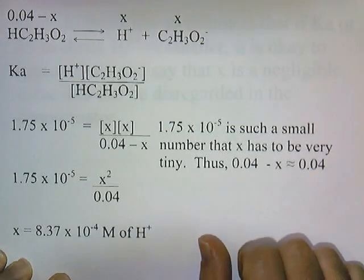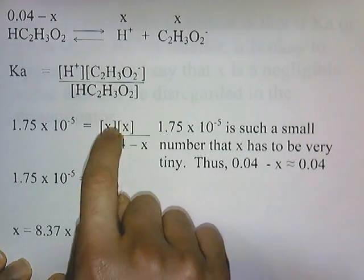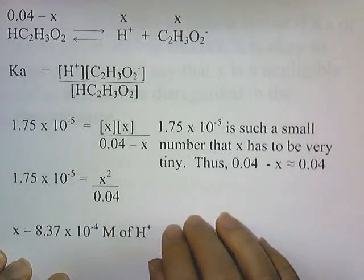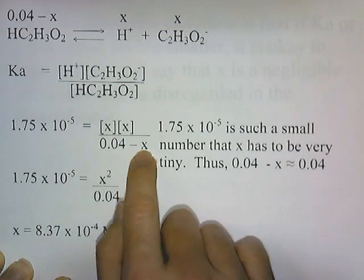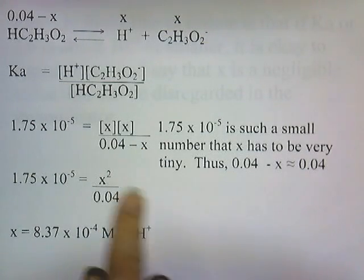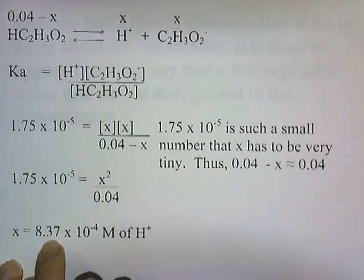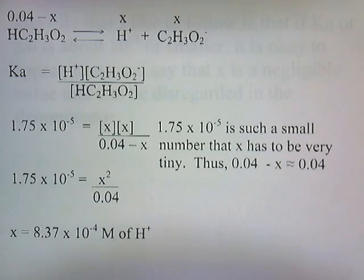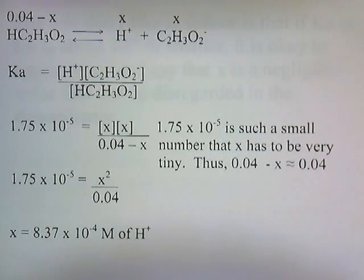It's probably something like 0.039999 — so close to 0.04 we'll just call it 0.04. The reason we know x is such a tiny number is because KA is a tiny number; the only way KA can be tiny is if these x values are really tiny. So since 0.04 minus x is approximately equal to 0.04, we write 0.04 on the bottom instead of 0.04 minus x. Multiply both sides by 0.04 and take the square root, and you get x equals 8.37 times 10 to the negative fourth molar of H+. That's our answer — not the exact answer, but so close to the actual value we don't worry about it. That's how much hydrogen ion is in a 0.04 molar bottle of acetic acid.